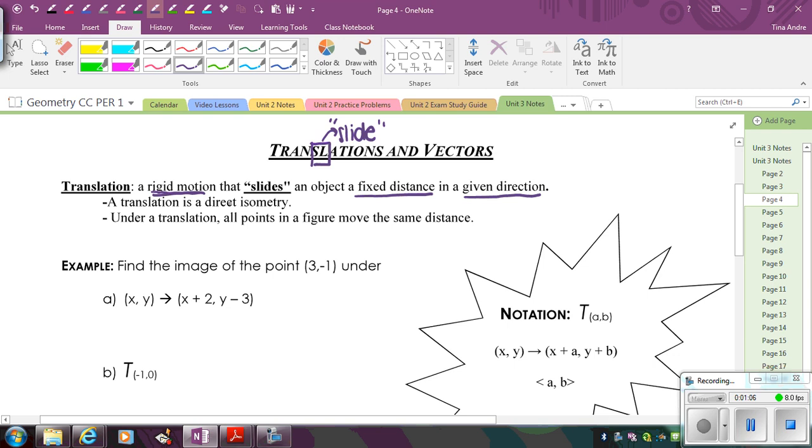And then under translation, all points will move the same distance away because the distance is fixed among all of the points. So if you translate a triangle, that distance between the original and the new one will always be the same between the pre-image and image points.